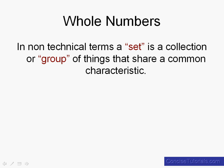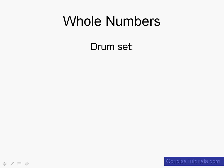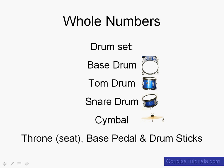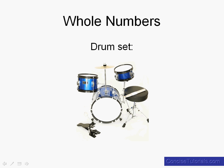So for instance you've probably heard of a drum set. Well a drum set, a basic drum set at least, has a bass drum and a tom drum and a snare drum and a cymbal and then you also have a throne or a seat, a bass pedal and some drumsticks. So here's a very basic drum set.